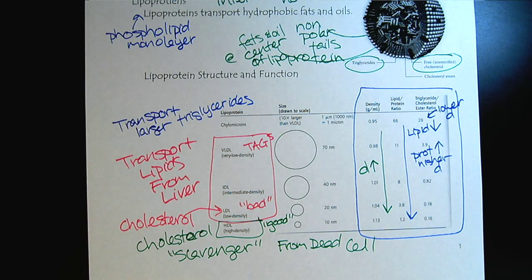So that wraps up our tutorial on bile salts and lipoproteins. It's really important to understand that with our triglycerides, our fats and oils, we need these special compounds because we have the issue of water solubility. Please take the time now to reinforce your understanding with some homework problems.